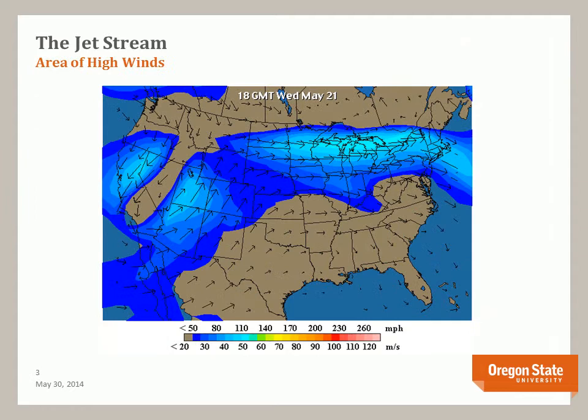This is another view of the jet stream outlined in blue color contours, this time a map view with the jet stream defined by wind speed vectors. Note that the jet stream is defined by the longer vectors, which means higher wind speed.